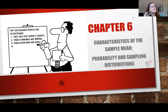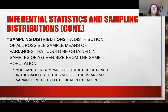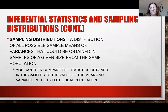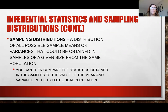We're going to go into sampling distributions and probability, building off of what you've already learned in chapter five. A sampling distribution is a distribution created with sample means — an entire distribution of means — whereas a normal distribution or standard distribution is a distribution made up of raw scores.